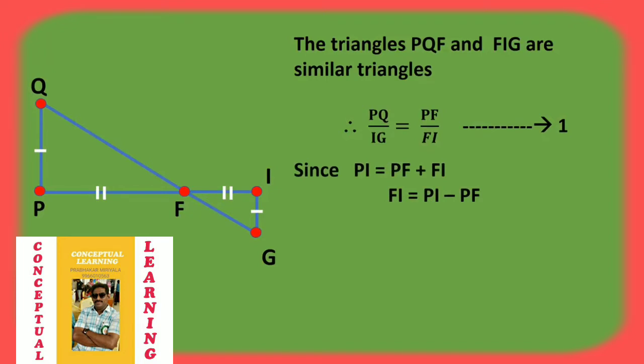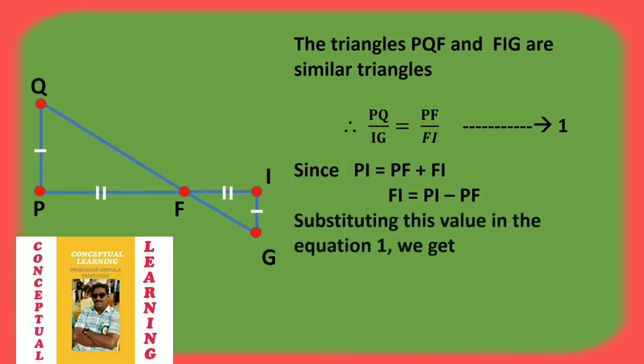Here, PI = PF + FI. From this, FI = PI − PF. Now substituting this into equation 1, we get PQ/IG = PF / (PI − PF). This is equation number 2.